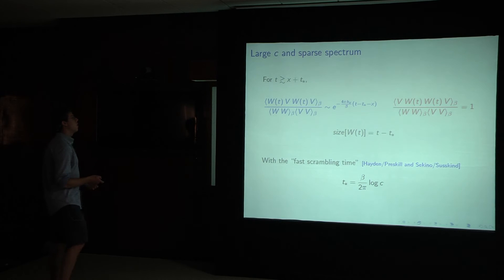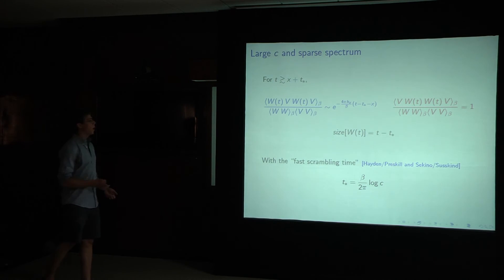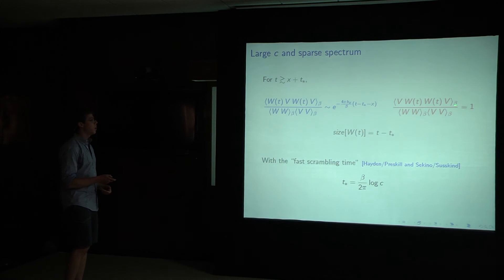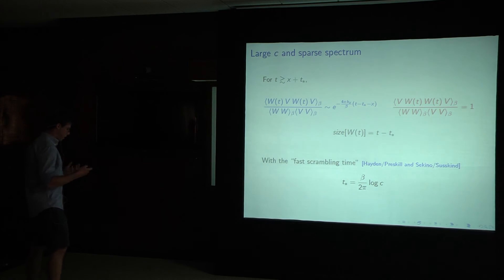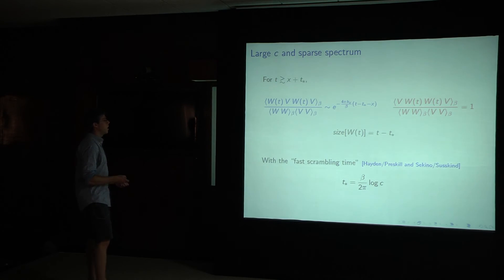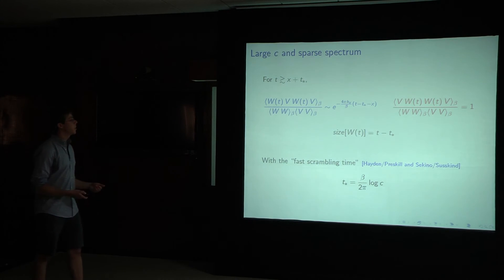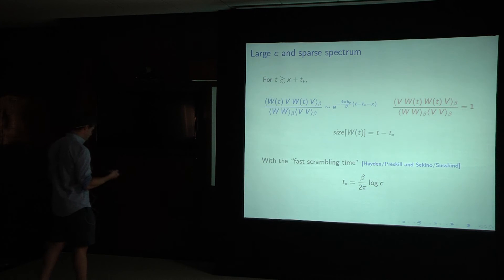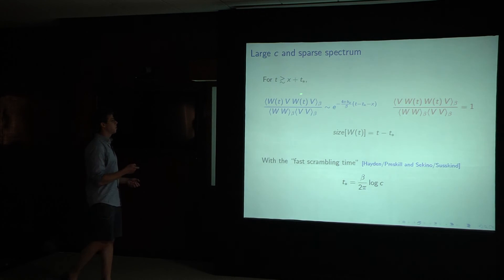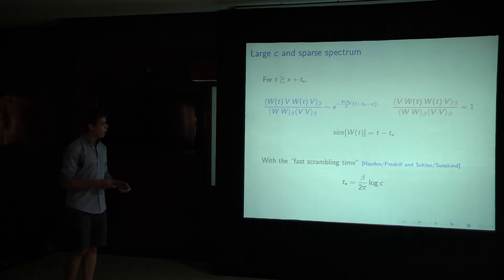So we can take this and evaluate it on both sheets, and we find that this theory is behaving chaotically. First, on the primary sheet, we see that it's equal to one, as expected. And on the second sheet, what we see is that it's decaying exponentially in time, and this occurs for any choice of our operators, v and w.